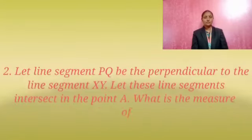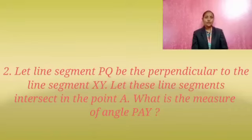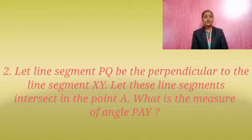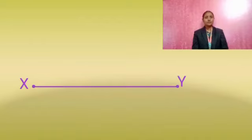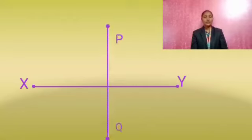The second question: if line segment PQ is perpendicular to line segment XY, and they meet at point A, then what is the measure of angle PAY? In this question, two line segments are given — line segment XY and line segment PQ. Line segment PQ is perpendicular to line segment XY, intersecting at point A.